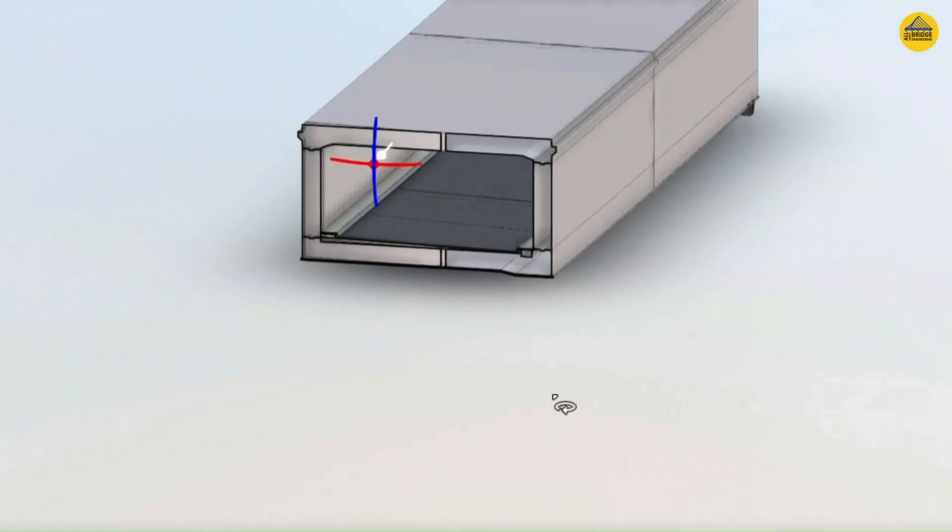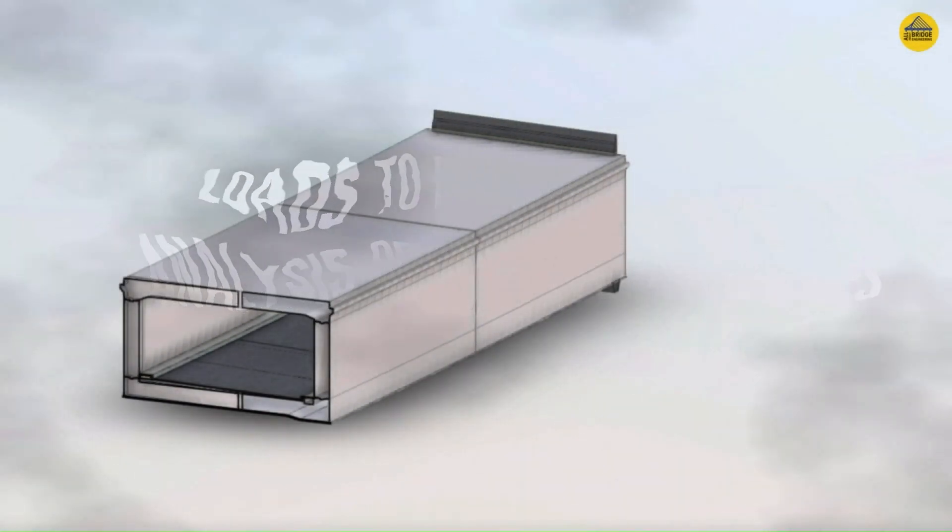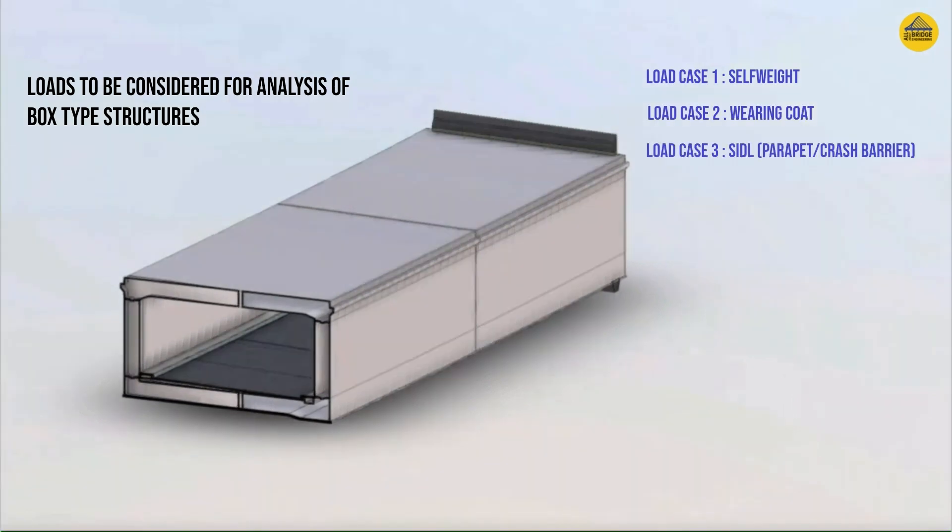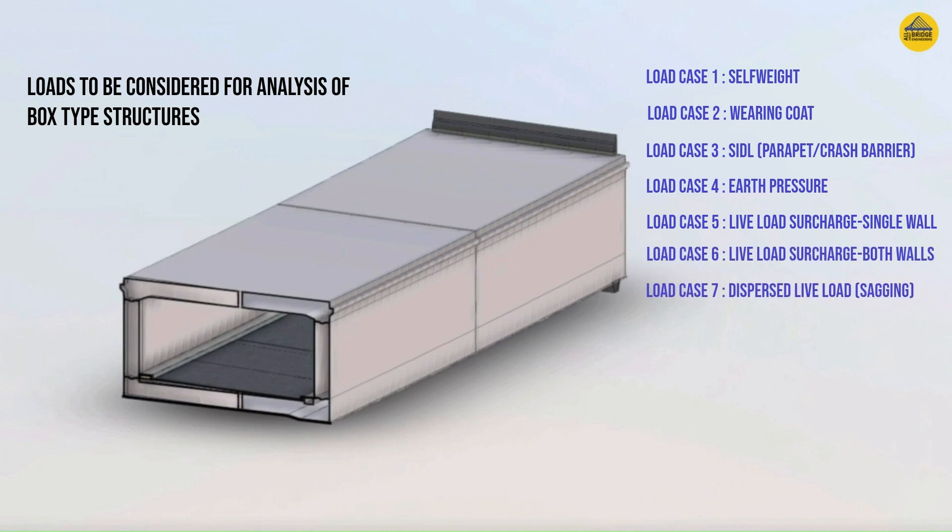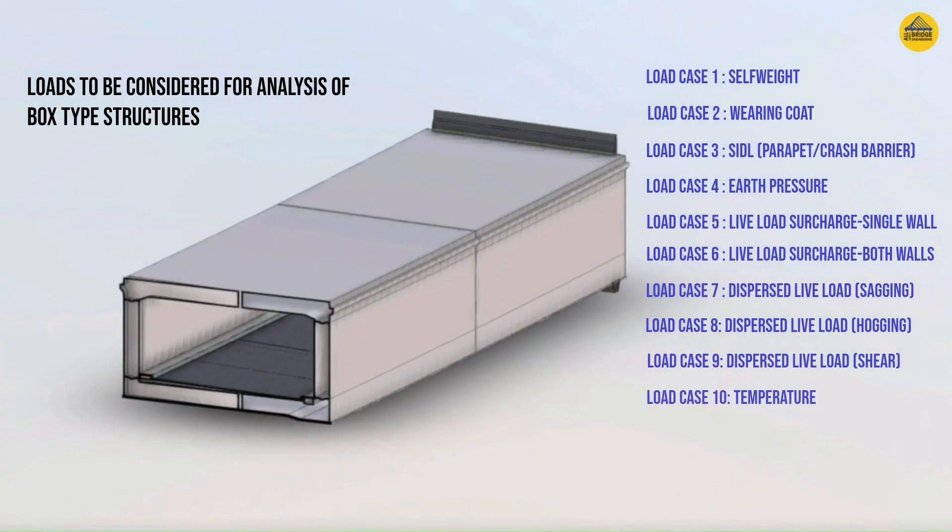Now let's talk about what are the loads to be considered for the analysis of such box type structures. These are typically straightforward for all box type structures. The number 1 load case on your screen is the self weight, then wearing coat, then superimposed dead load. Although wearing coat is also superimposed dead load, in many codes the partial safety factor associated with wearing coat is different than superimposed dead load. That's why 2 separate cases are made. Then obviously the box will retain earth on each side, so earth pressure will come. Live load surcharge on single wall, live load surcharge on both walls depending upon the traffic conditions will come. And as I mentioned, live load is applied in dispersed form for sagging, hogging, and shear reactions. Apart from this, if the box does not have any fill over it, then temperature loads also play a vital role. So these are a minimum of loads that have to be checked and applied on the structure during its analysis, and of course the load combinations will come after that.